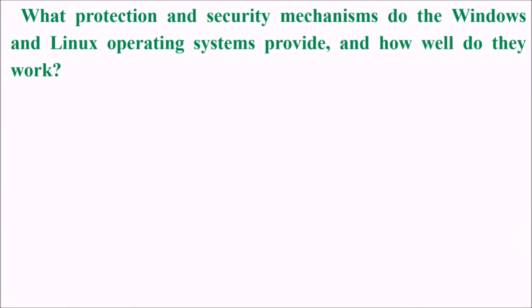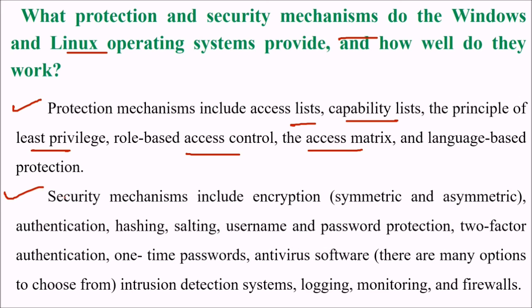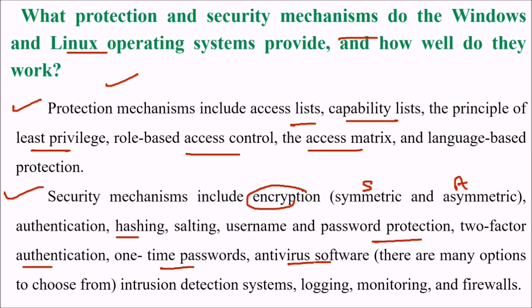What protection and security mechanisms do Windows and Linux provide? Protection mechanisms include capability lists, the principle of least privilege, role-based access control, access matrices, and language-based protection. Security mechanisms in these operating systems include encryption — both symmetric and asymmetric — authentication, hashing, salting, username and password protection, two-factor authentication, one-time password (OTP), and antivirus software.